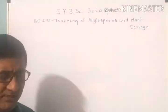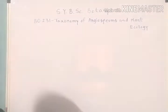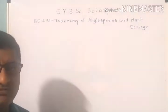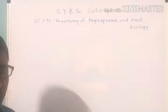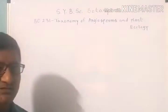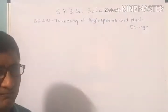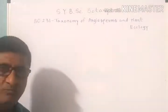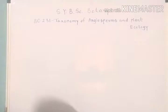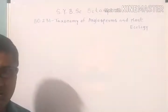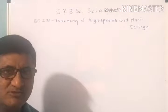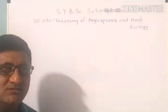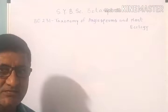Under the Credit Based Choice System, you have to take three subjects and one language. You have to choose one language and three subjects from your last year. I am going to teach you one of the papers of Botany — for SYBSC, semester third. Why is it semester third? Because your FYBSC semester first and semester second is already considered.